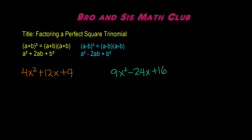So here we have two examples: 4x² plus 12x plus 9, and 9x² minus 24x plus 16. We'll be factoring these perfect square trinomials. To determine whether a trinomial is a perfect square, you look at the first and last terms. If they are perfect squares, then it's a perfect square trinomial. 4x² is a perfect square because the square root of 4x² is 2x, and 9 is a perfect square because the square root of 9 is 3.